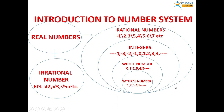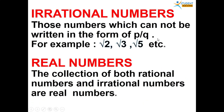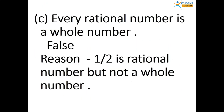You can always refer to this diagram where each collection is contained within another. Natural numbers are contained in whole numbers. Whole numbers are contained in integers. Integers are contained in rational numbers. This is a very interlinked diagram.